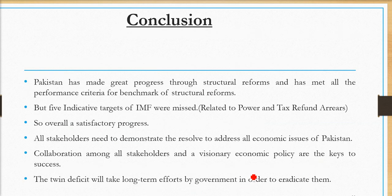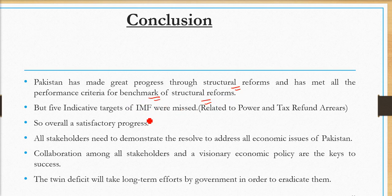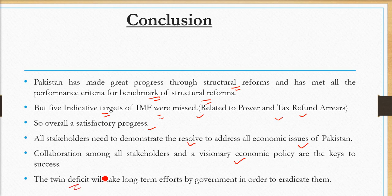In conclusion, Pakistan has made some structural reform changes, though there has been economic downfall. It has largely managed to meet the criteria of structural reforms; however, the indicative targets set by the IMF are missed in the power and tax refund areas. Overall it is satisfactory, and all stakeholders need to collaborate toward a visionary economic policy. The twin deficit — that is the current account deficit and the fiscal deficit — will require long-term persistent efforts.